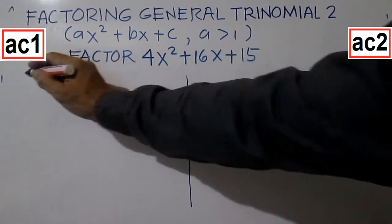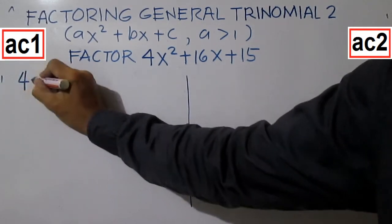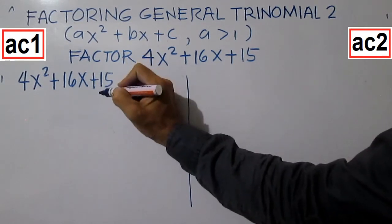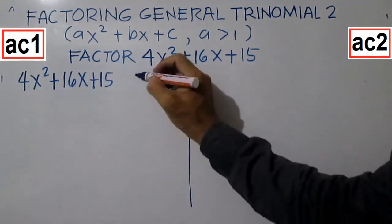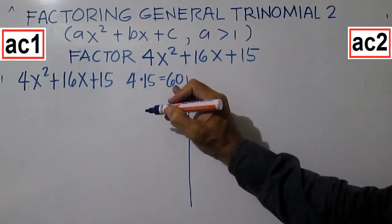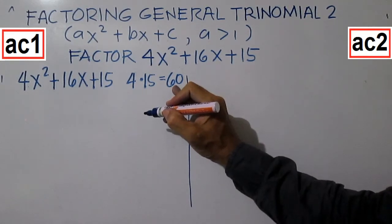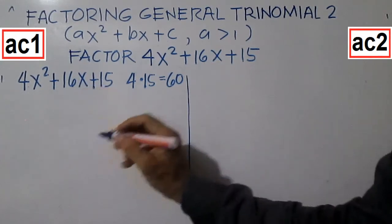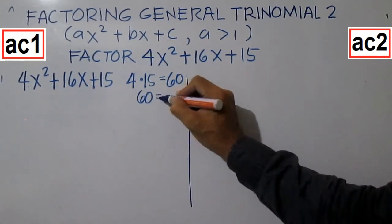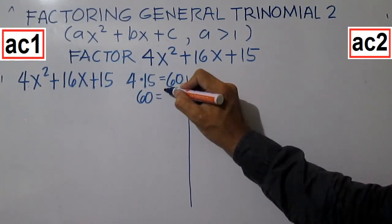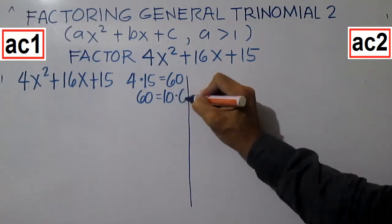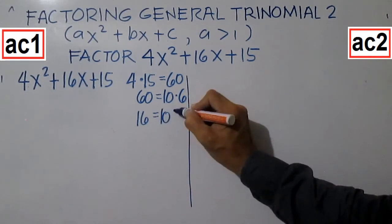Example: factor 4X squared plus 16X plus 15. A equals 4 and C equals 15. 4 times 15 equals 60. Then think of two numbers that will give you a product of 60 and a sum of 16. 60 equals 10 times 6, and 16 is equal to 10 plus 6.